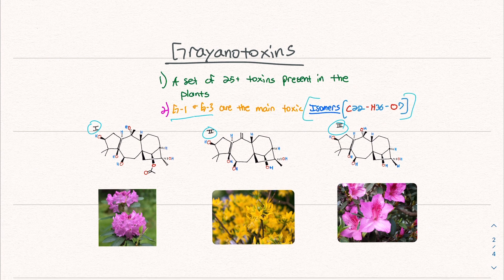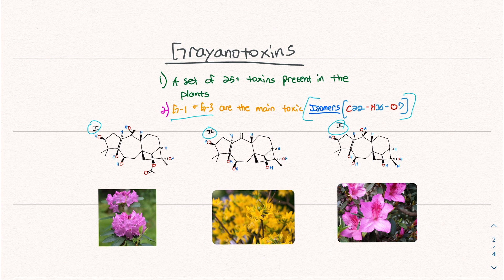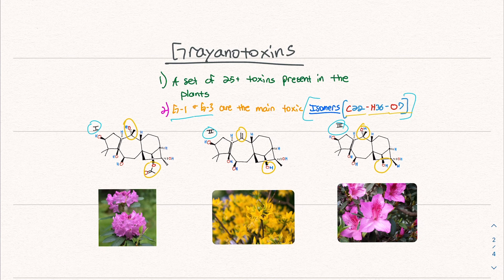So what is an isomer? Isomers are chemicals that have the same formula. So in this case, 22 carbons, 36 hydrogens, seven oxygens, but they look a little different. So I know these structures look crazy, but they're a little different in these places. Here and here, here and here, and here and here. If you pause, you'll see that the main backbone, what I did circle is the same, but what I did circle is a little different. And that's what an isomer is.